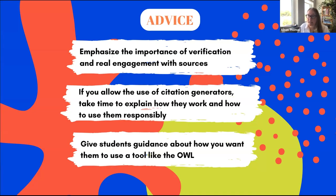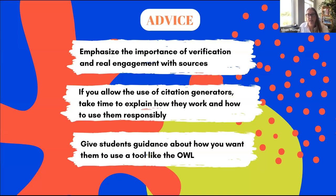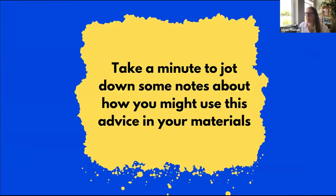If you allow the use of citation generators, take time to explain how they work and how to use them responsibly. Give students guidance about how you want them to use a tool like the OWL. Students will often need help figuring out how to double-check sources — not all students know how to use amazing library resources for reverse searching. Most students know a search bar, but finding a specific citation requires a different set of skills entirely.